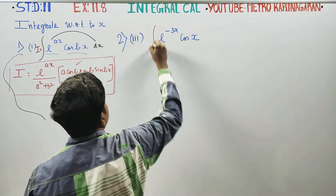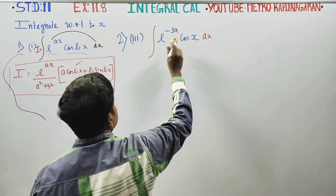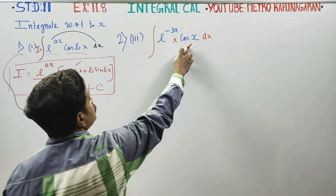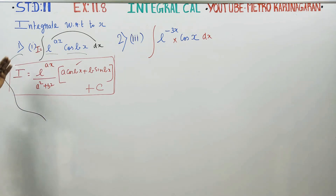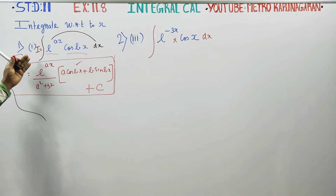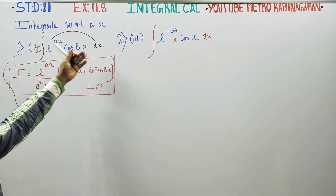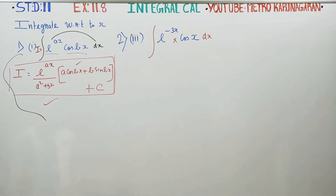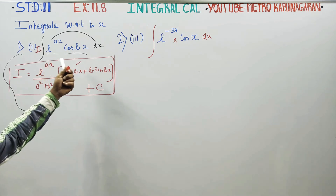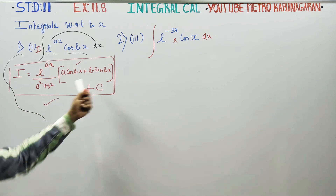If you have to integrate this sum with respect to X, you can directly integrate it. I will use the exponential trigonometry UDV formula. We have already done the sum e^(ax) cos(bx) in a previously uploaded video. Please check the playlist for e^(ax) cos(bx) integrated with respect to X — this is a ready-made answer.